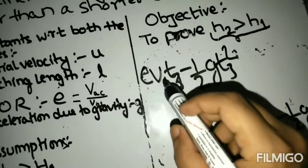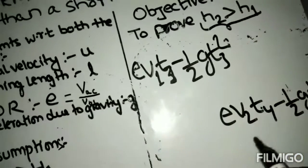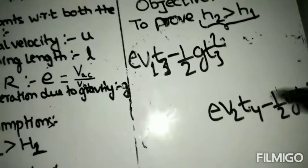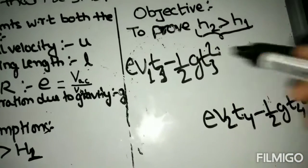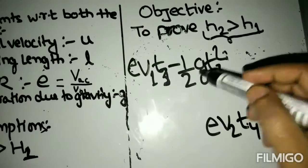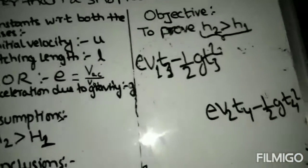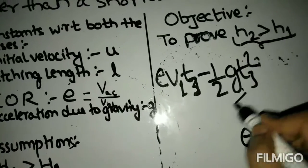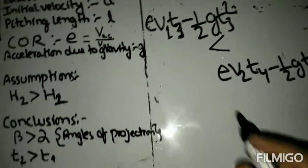e is constant. v1 is smaller than v2, we already have concluded. t3 is smaller than t4, we already have concluded. And g is another constant which tells us that h1 is smaller than h2.